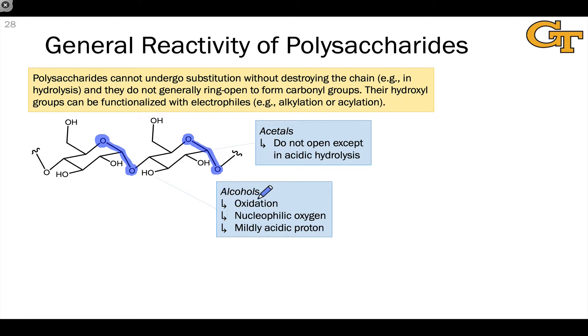Polysaccharides still include a very large number of alcohol groups, and these are susceptible to, for example, oxidation, nucleophilic substitutions with electrophiles like alkyl halides and acyl halides. The proton here is mildly acidic. But as in the monosaccharides, we can't really selectively react to one hydroxyl group in these reactions, and so typically we'll use a very large excess of base and the alkylating or acylating agent to do substitution reactions at these hydroxyls.